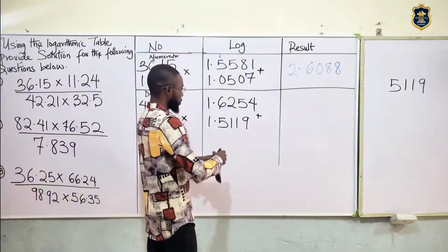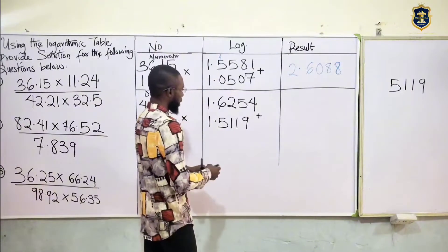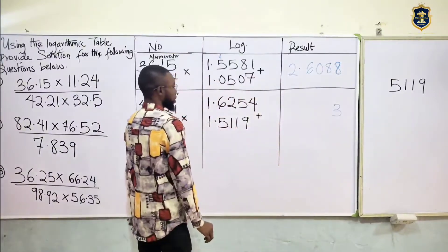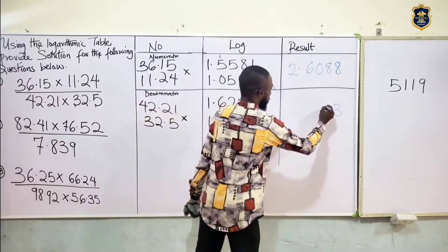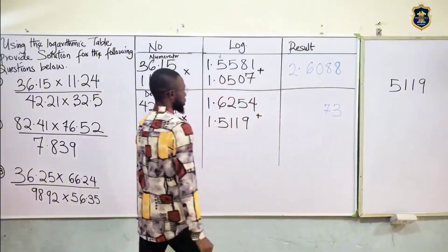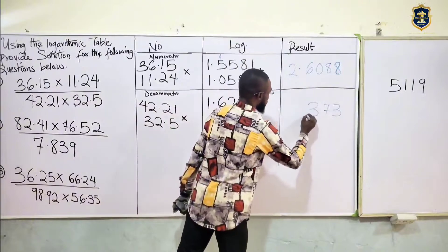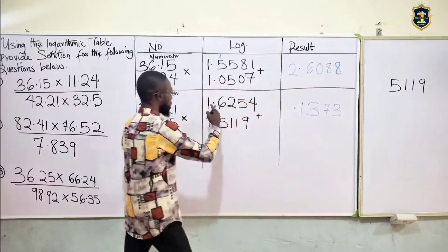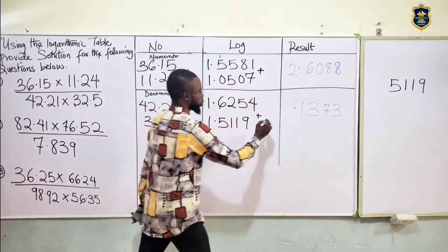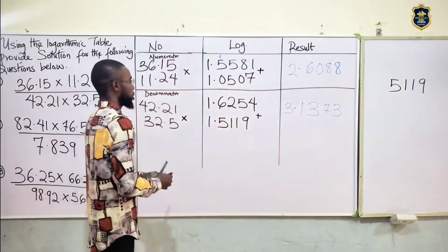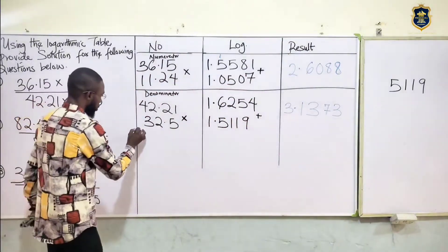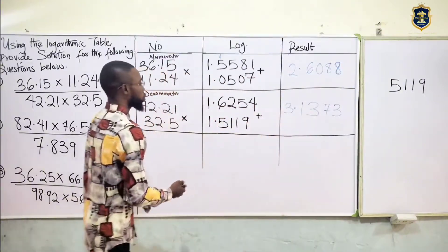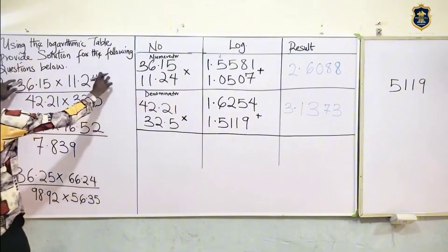By addition: 9 plus 4 is 13 — put 3, carry 1. 5 plus 1 is 6 plus the 1 carried is 7. Then 2 plus 1 is 3. And 6 plus 5 is 11 — put 1, carry 1. 1 plus 1 is 2 plus that 1 should be 3. That's our answer for the denominator.